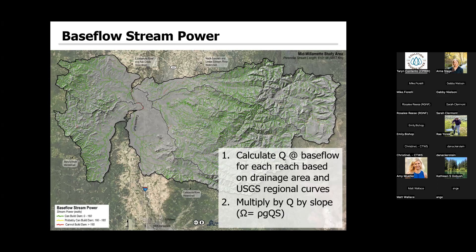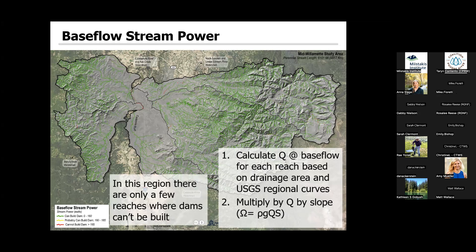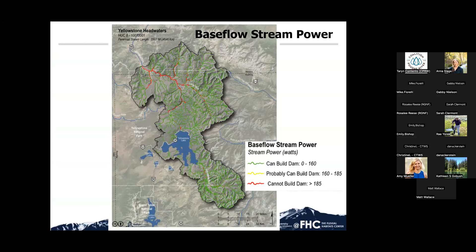This is a pretty underwhelming map in this setting — there are very few areas where the model says dams can't be built. A more interesting example would be in the Yellowstone headwaters, where you can see more areas that can't be built on.